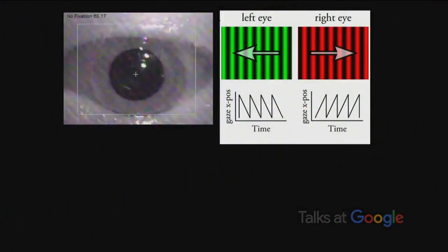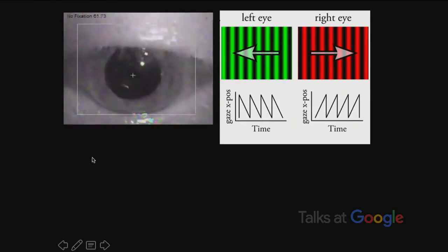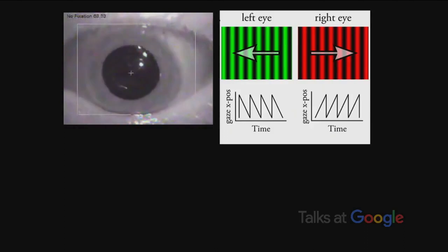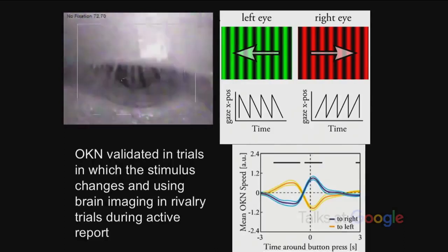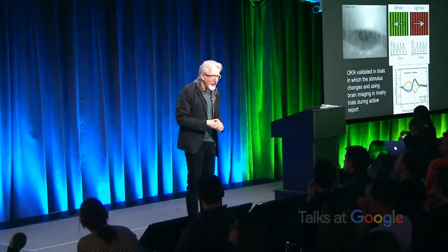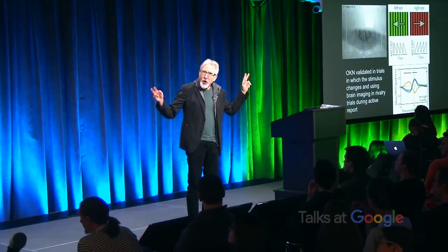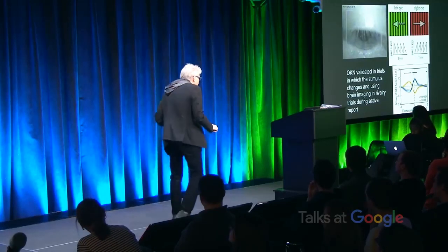If you do binocular rivalry with a grid moving one way in one eye and a grid moving the other way in the other eye, there's a nice index of what you are conscious of, called optokinetic nystagmus. The eye movements indicate which thing you are conscious of, and it can be shown using people's reports that they correlate pretty well. You've got an index of what people are experiencing, and now you can show them the original stimuli and not ask them to report — a no-report paradigm.